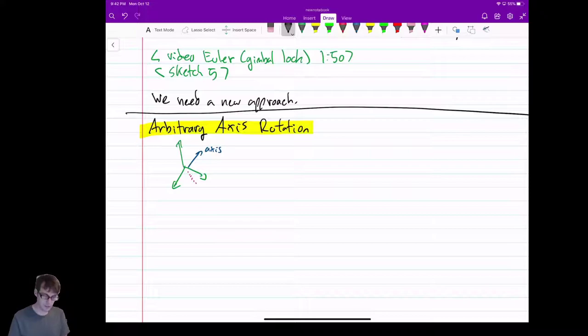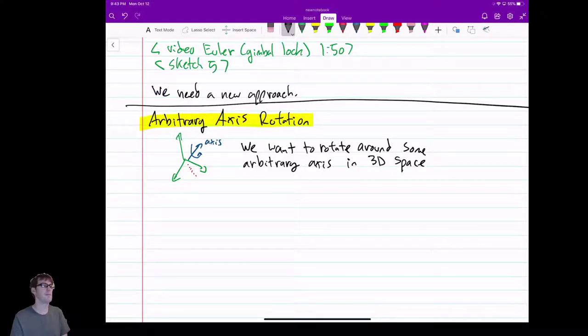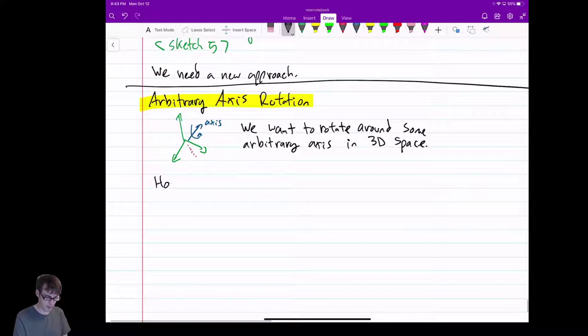So it's an axis in space, and I want to rotate around that axis. Imagine I have a shape here. I could define an axis any which way I want and then rotate it around that. We want to rotate around some arbitrary axis in 3D space. How do we do it? There's a lot of ways to do it, actually.